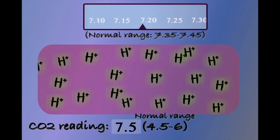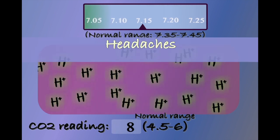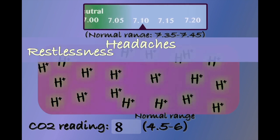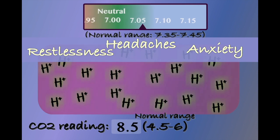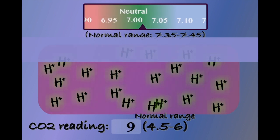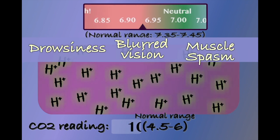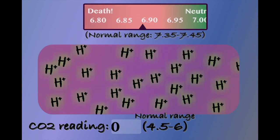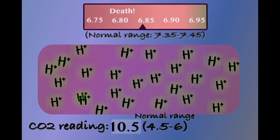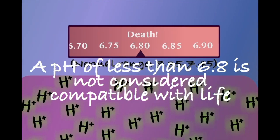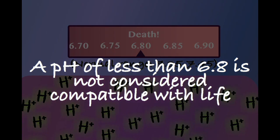These could include relatively mild symptoms, such as headaches, restlessness and anxiety. Moving on to more serious complications, such as blurred vision, drowsiness and muscle spasms. A severe acidosis can be fatal. A pH of less than 6.8 is not considered compatible with life.